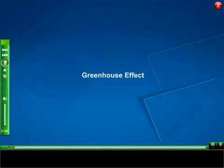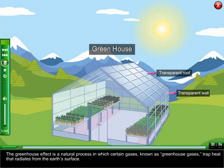The greenhouse effect is a natural process in which certain gases, known as greenhouse gases, trap heat that radiates from the earth's surface.